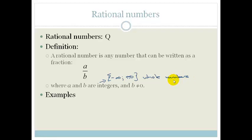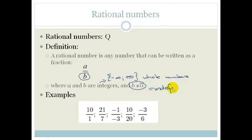Examples of your rational numbers are, for example, 10 over 1, 21 over 7, minus 1 over minus 3, 10 over 20, and minus 3 over 6. You can see that all whole numbers are either at the top or the bottom, and they can be either positive or negative or both. Your denominator cannot be equal to 0 because if it's equal to 0, then you're dividing by 0, which is undefined.